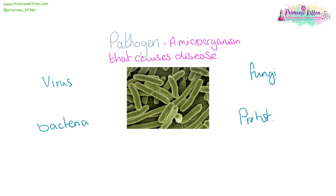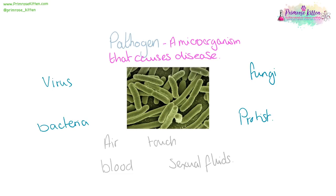Pathogens can be spread in a number of different ways. They can be spread in the air — for example, by coughing. They can be spread by touch; for example, if you have bacteria on your hands and you touch a table and someone else then touches that same table.